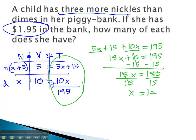We said x was the dimes. There are 12 dimes. The nickels, then, is x plus 3. 12 plus 3 is 15. We have 15 nickels.